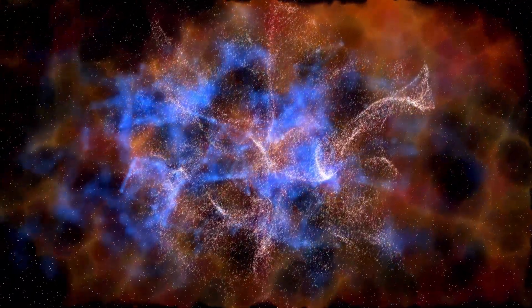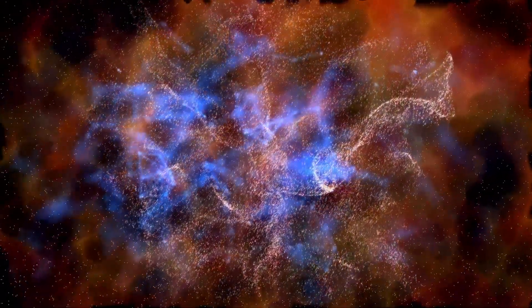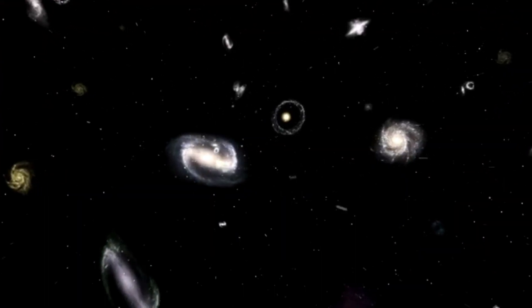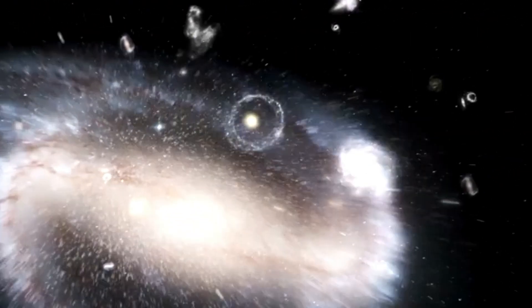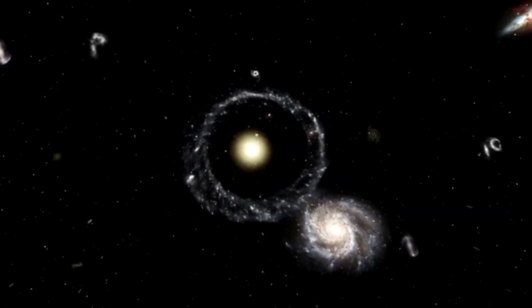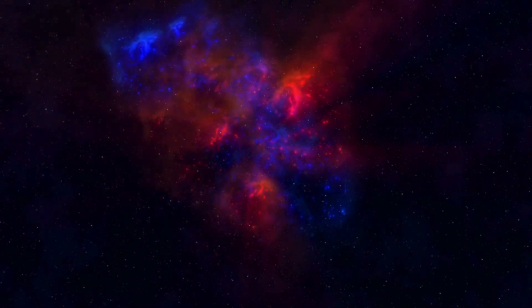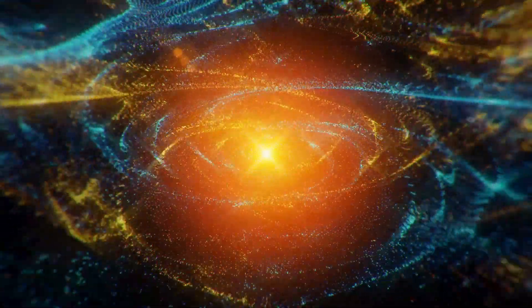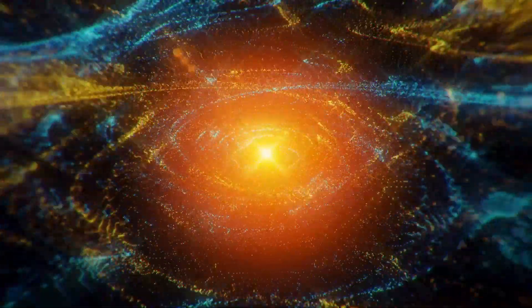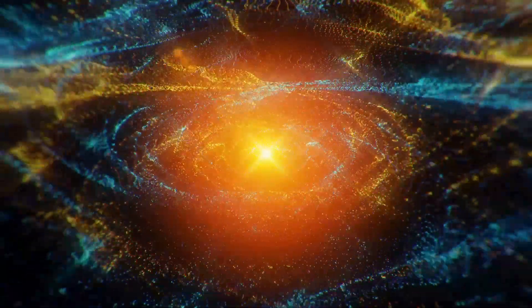As well as peering deep into the past, the JWST is also providing a new perspective on the structure of the universe itself. The pictures reveal vast cosmic networks of dark matter and galaxies stretching across the universe like a cobweb. These networks, shaped by the gravitational pull of dark matter, are the foundation of the universe's large-scale structure. By mapping these structures, scientists hope to better understand the role that dark matter plays in the formation and evolution of galaxies. The JWST's images provide a clearer view of these cosmic networks than ever before, offering new insights into the nature of dark matter and its influence on the universe.